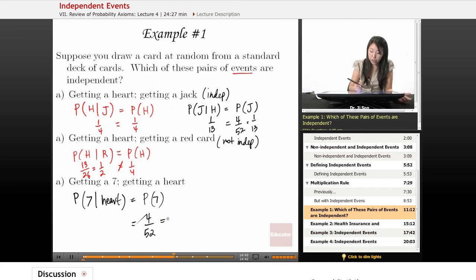And that's going to reduce to 1 out of 13. Because it's a rate of 1 out of every 13. Because for every suite, you only have one 7. Okay. But what about probability of getting a 7 given that it's a heart? So if it's a heart card that's only 13 cards, the probability of getting a 7 is 1 out of 13.